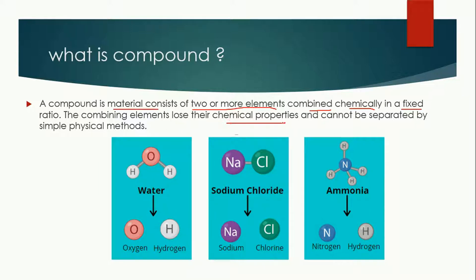The combining elements will lose their chemical properties and they cannot be separated by physical methods. For example, here we have water. The combining elements of water are oxygen and hydrogen — they both are gases — but when these two gases are combined together by a chemical reaction, water is formed, which is a liquid.